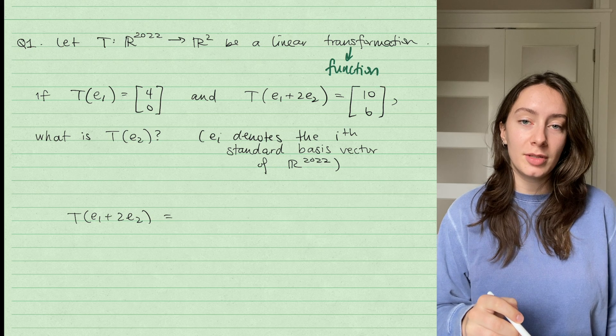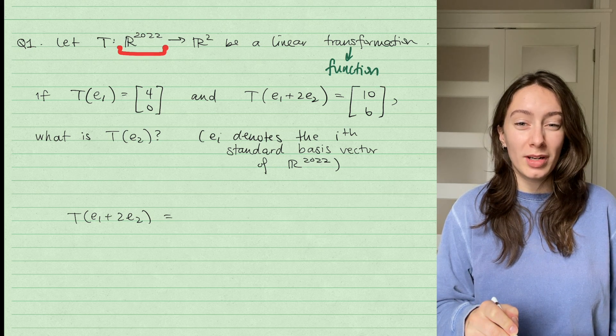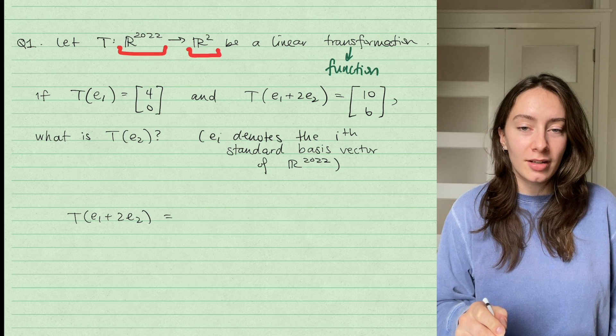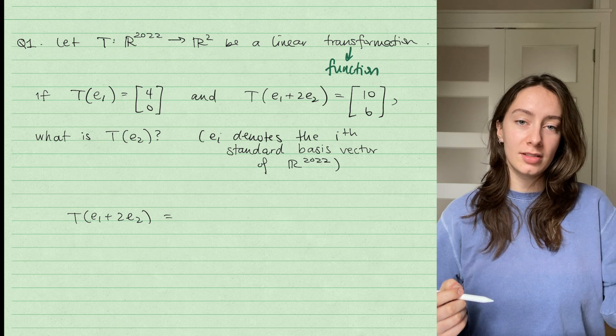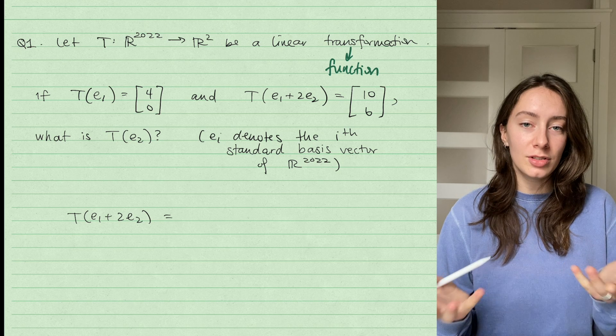That just means that my transformation is a function that takes inputs in 2022 dimensional space, and its outputs are going to be in two-dimensional space. So given some 2022 vector, it's going to give you back some two vector.